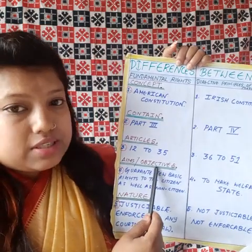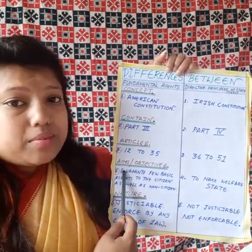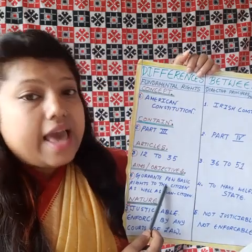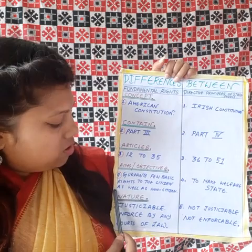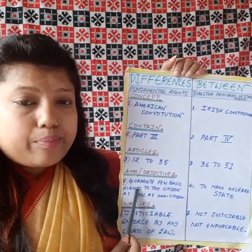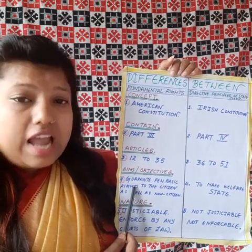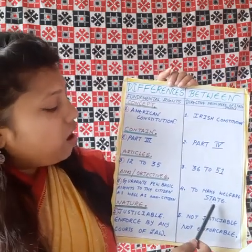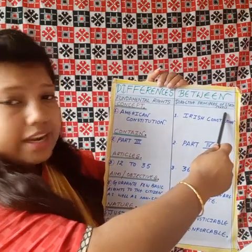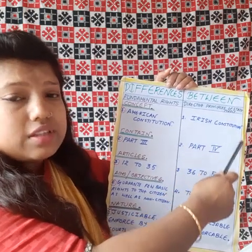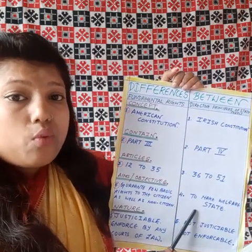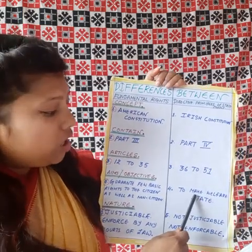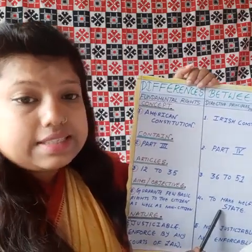Point number four is Aims and Objectives. The main aim of Fundamental Rights is to guarantee certain basic rights to citizens as well as non-citizens — for example, the right to life, since each and every person in this world has the right to live. The main aim of Directive Principles of the State Policy is to make a welfare state, meaning to protect and promote the economic and social well-being of citizens.